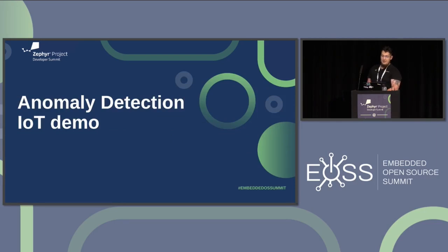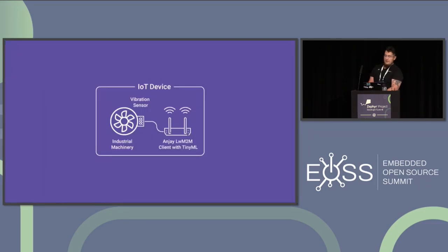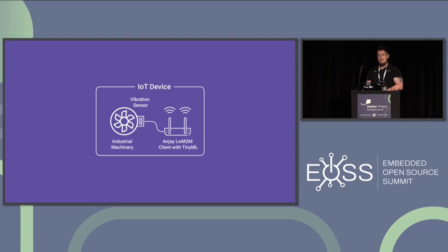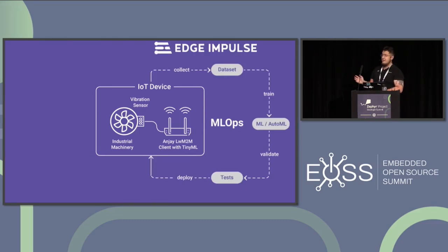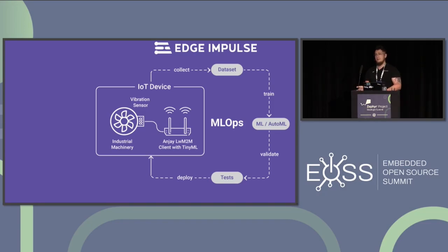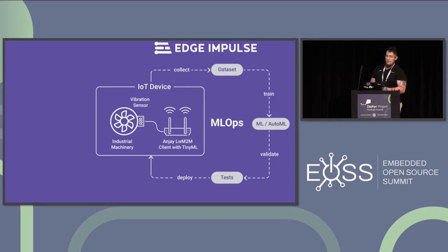Moving to the anomaly detection demo — a high-level view. We have our machinery: in this case, a simple fan with an accelerometer attached to it — a vibration sensor and an IoT device with connectivity which can run the model. For the TinyML flow, we are using the Edge Impulse platform to collect data from the accelerometer and train the machine learning classifier to generate standalone libraries for C. This library containing the TinyML model can run on the device and provide signaling about pattern detection.